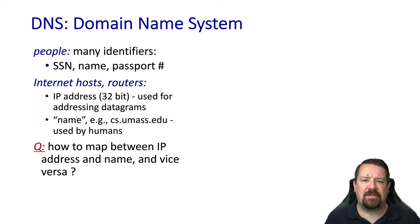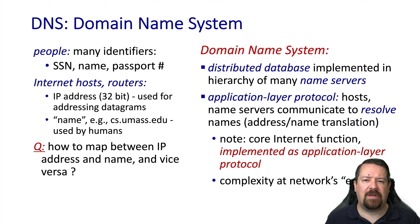The basic idea is that it's difficult for humans to remember IP addresses. This is especially true today with IPv6 addresses being 128 bits long. So DNS provides a distributed database to map between human-usable names and IP addresses. In order to make this system scalable, it includes a hierarchy of DNS servers. Clients, which are part of end-user hosts, communicate with this hierarchy in order to resolve names to IP addresses.